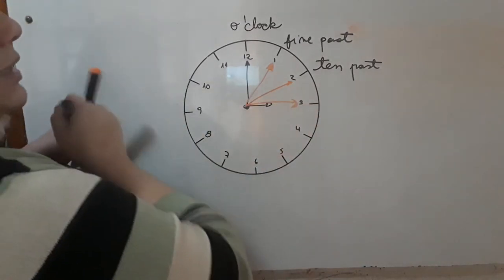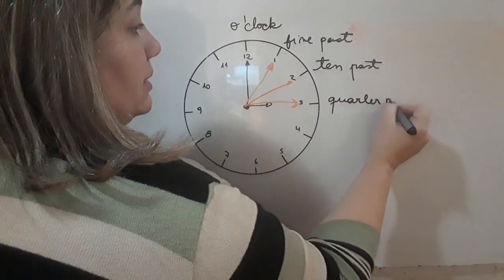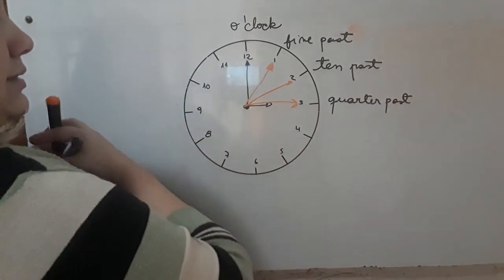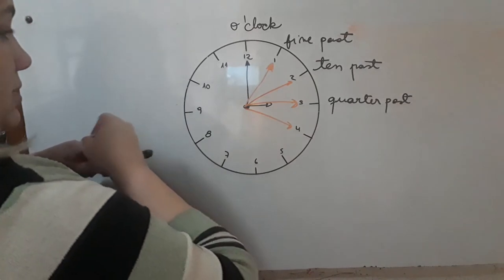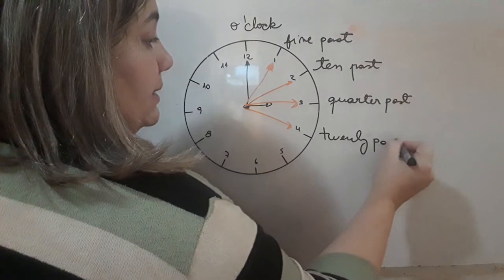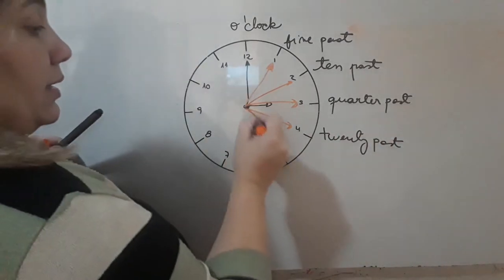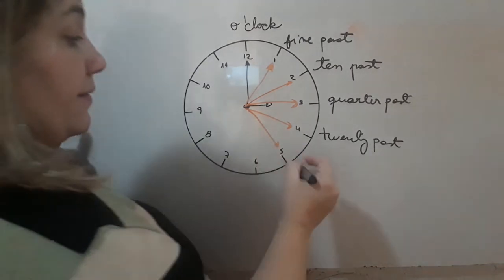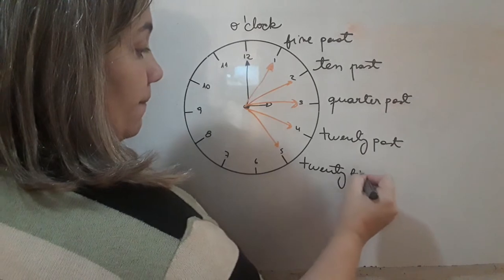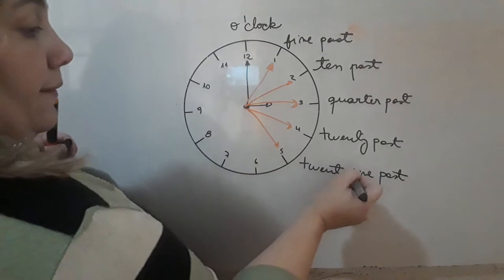It is a quarter past three, right? And then, twenty past three, and then, twenty-five past.